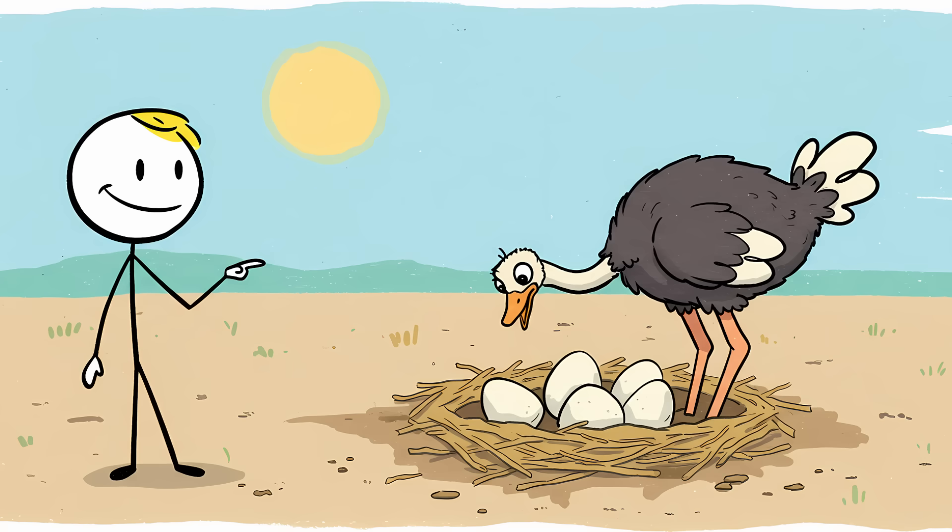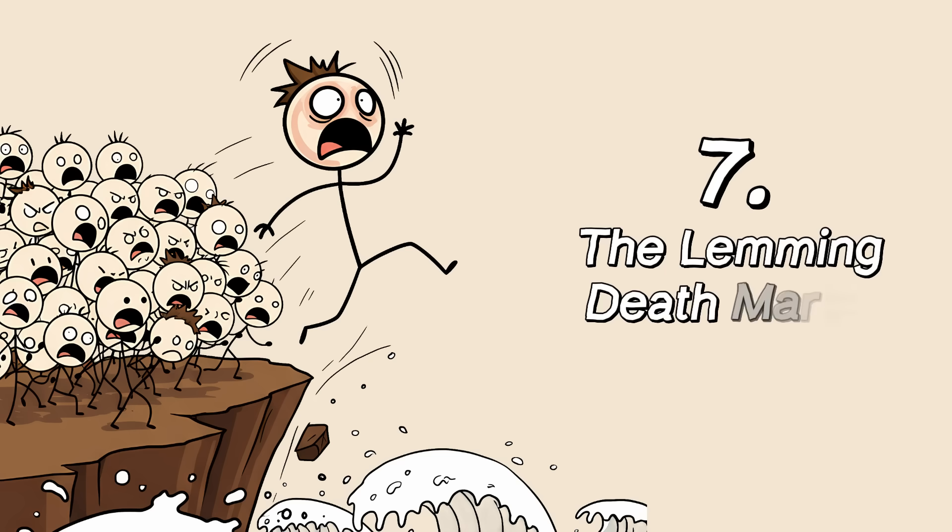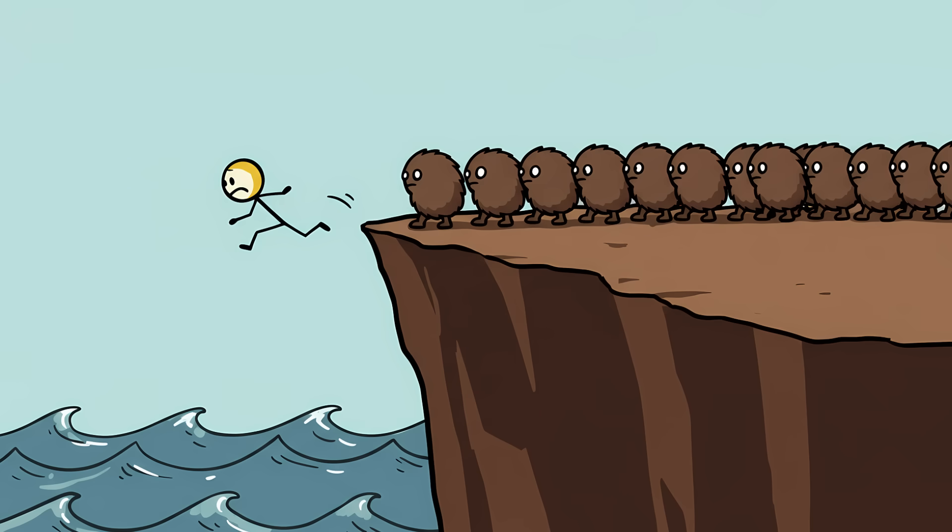So the ostrich isn't an idiot. It's just a very large, very fast bird that's also a pretty decent parent trying to hide. Number seven, the lemming death march.